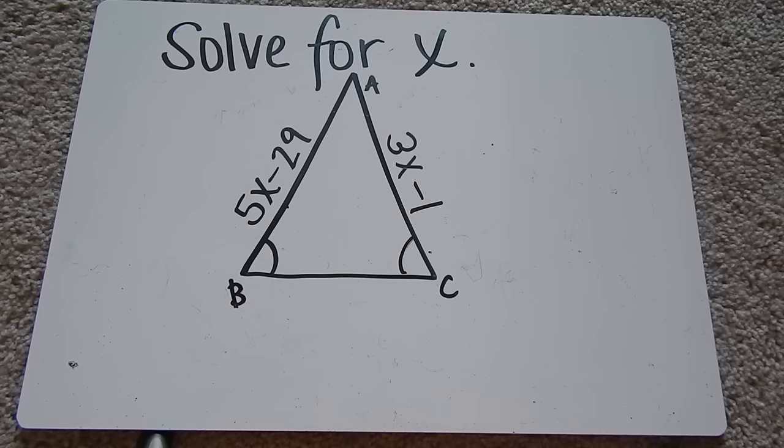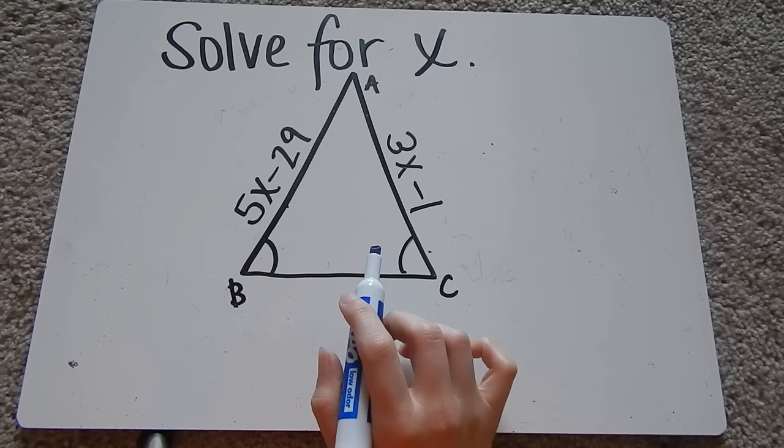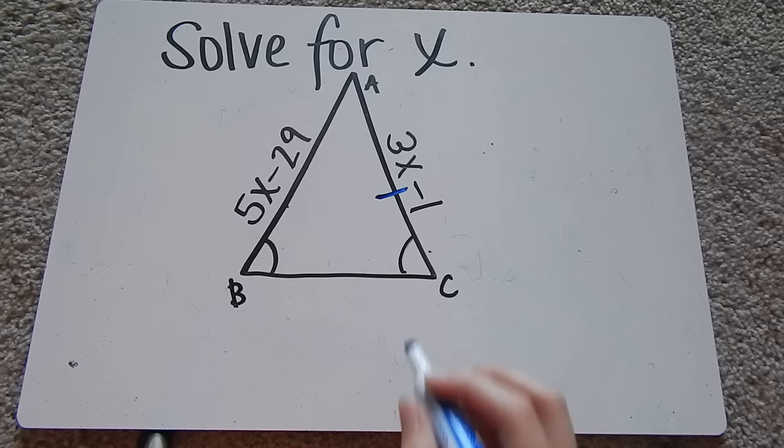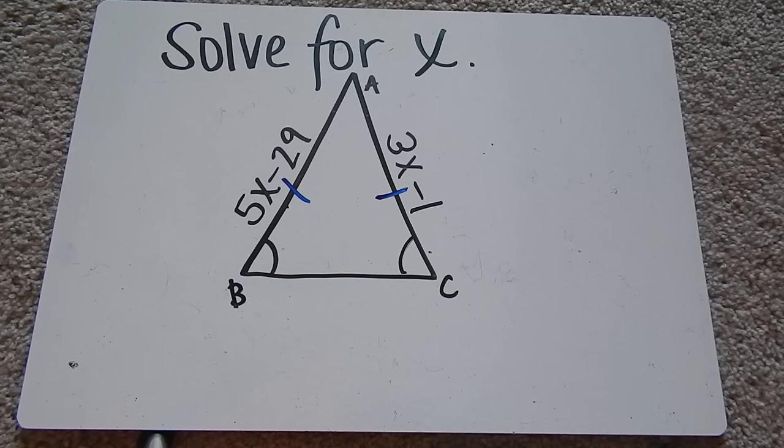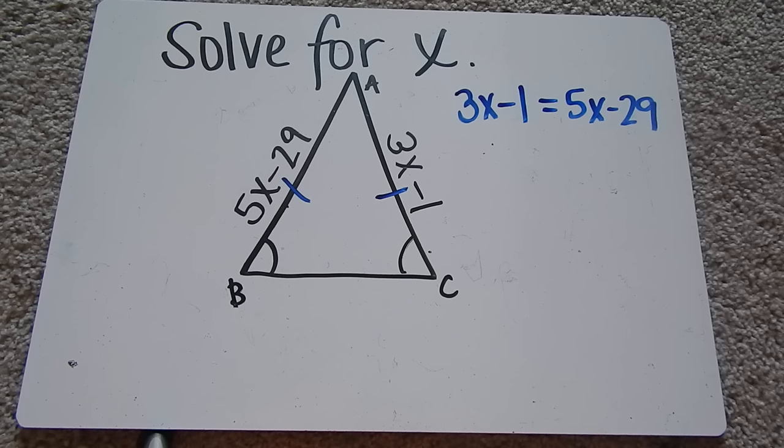And our last example. It says solve for x. So in this problem, we're actually going to work backwards. We know that these angles are equal. That means that the opposite sides of the angles are equal. It works both ways. So this angle here means that side. This angle here means that side are equal. Since these two sides are equal, we can set them equal to each other and solve. 3x minus 1 equals 5x minus 29.